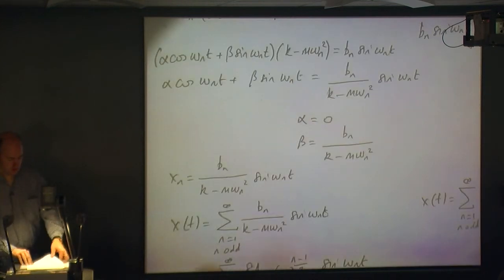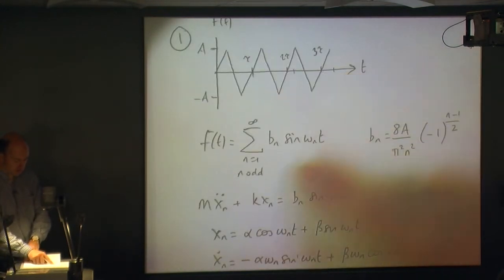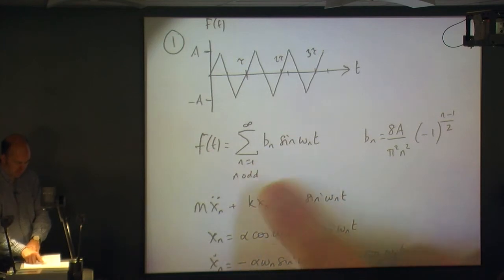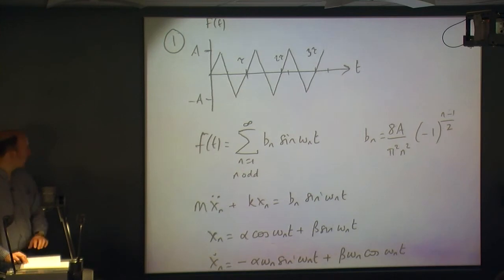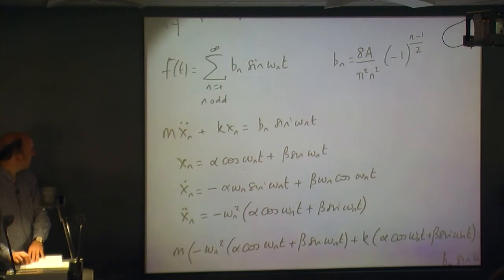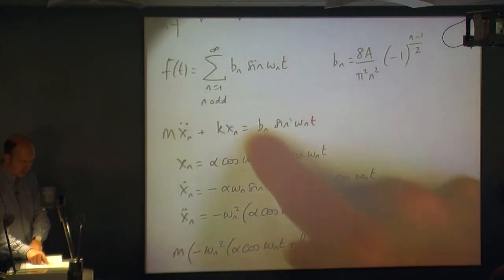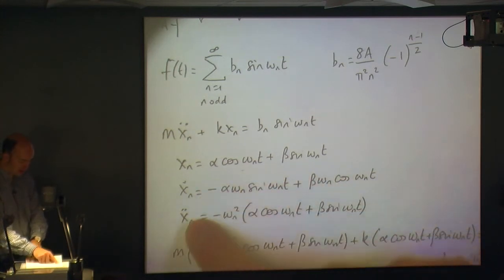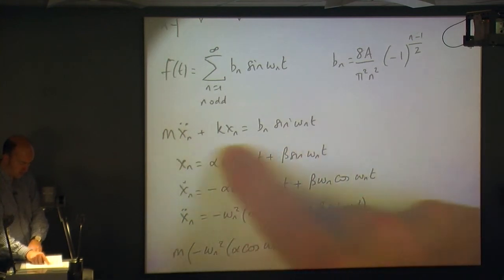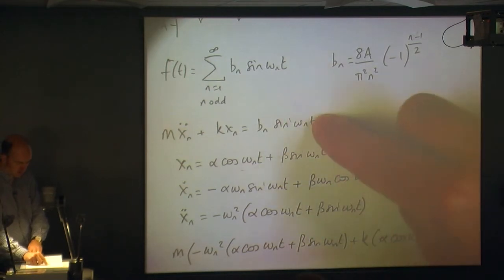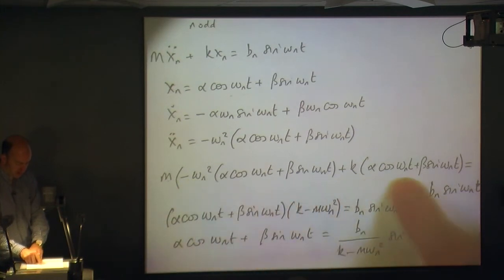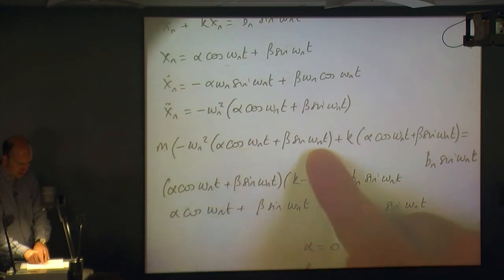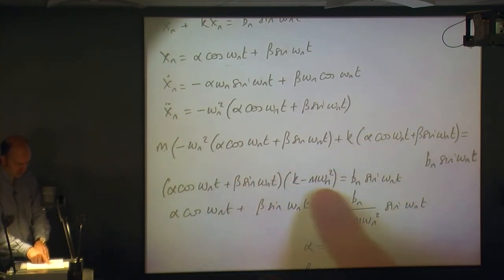To recap: we have our forcing function given in the question, and its Fourier series is given — it only has sine terms because it's an odd function, with the b_n value valid for odd n only. We then assign a trial function matching the forcing function — a sinusoid — differentiate it twice to get ẍ_n, and plug both into the equation of motion m ẍ + kx = forcing function. Rearranging gives the common factor (k − m ω_n²) on the left-hand side.